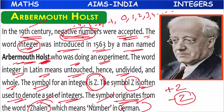So 'Zahlen' means numbers. The name integers — these negative numbers were named as integers in 1563 by Arbor Mouth Holst.